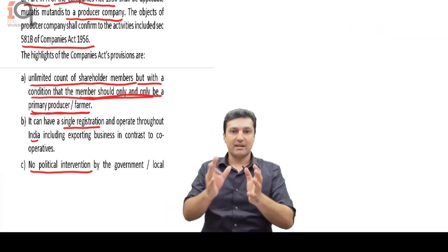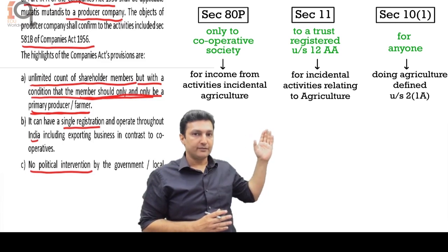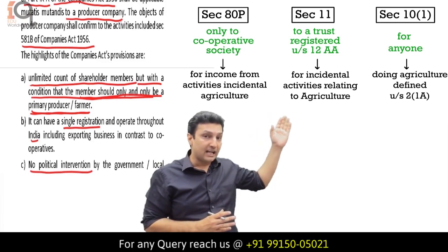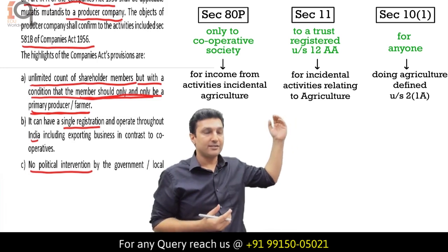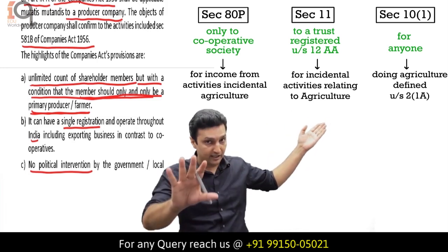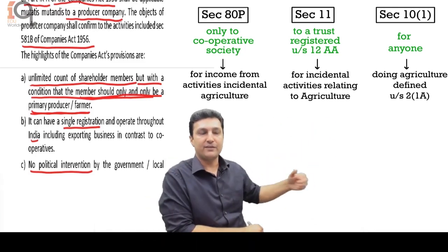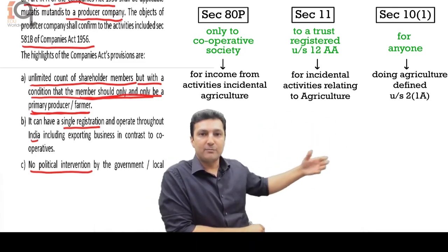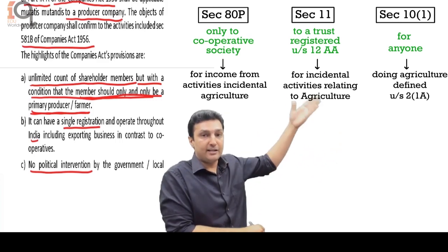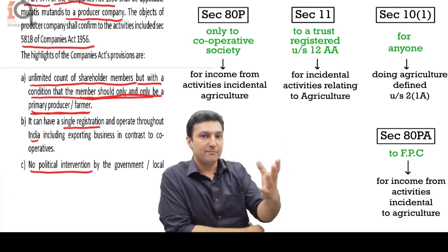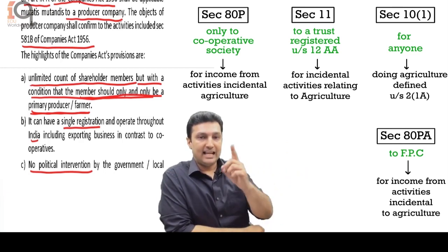To summarize: ATP is for cooperatives. If you are directly into agriculture, you get an exemption under section 10. If you are registered as a society or trust, you may claim exemption under section 11, but in that case you will have to use 85% of the profits for charitable purposes — there are other conditions. ATPA covers a farmer producer company which can share profits and is now eligible for a deduction under ATPA.